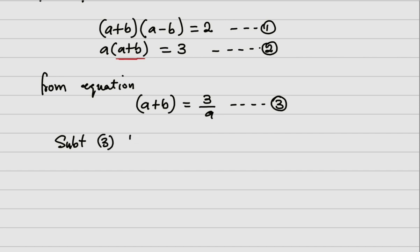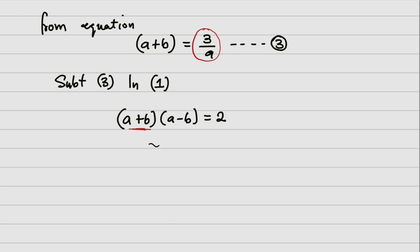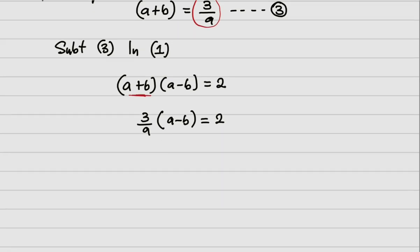I will now substitute equation three into equation one. In equation one, recall it is (a + b) into (a - b) equals two, but (a + b) has been worked out to be three over a. So substituting, I now have three over a, into (a - b), equals two. By cross multiplication, three into (a - b) equals two a.